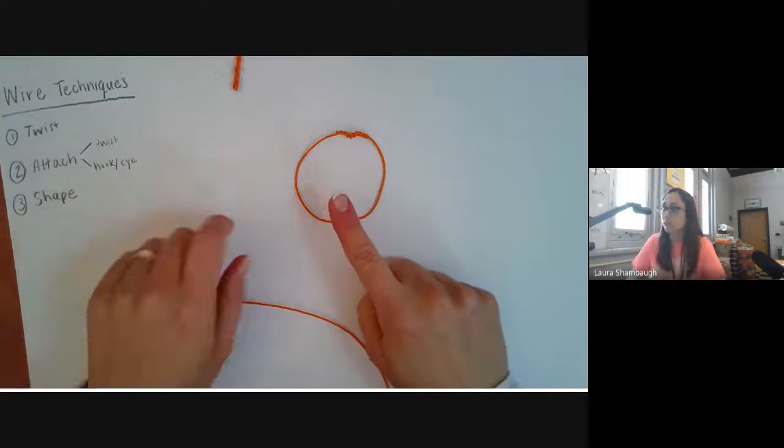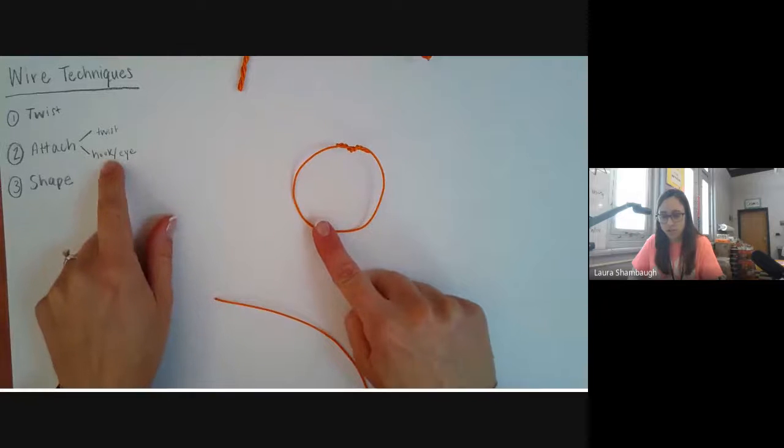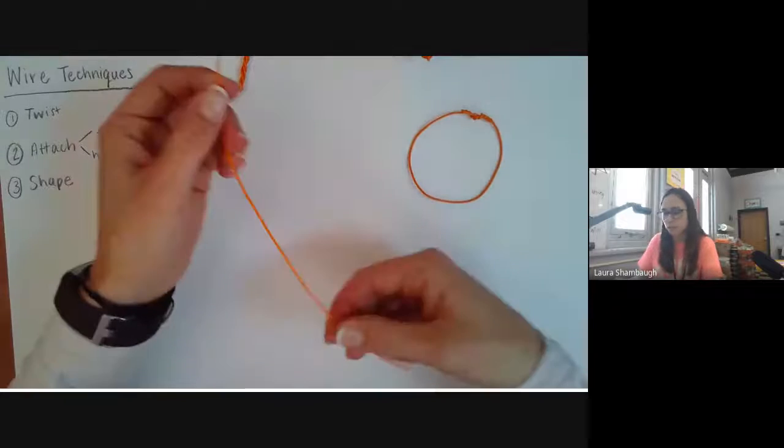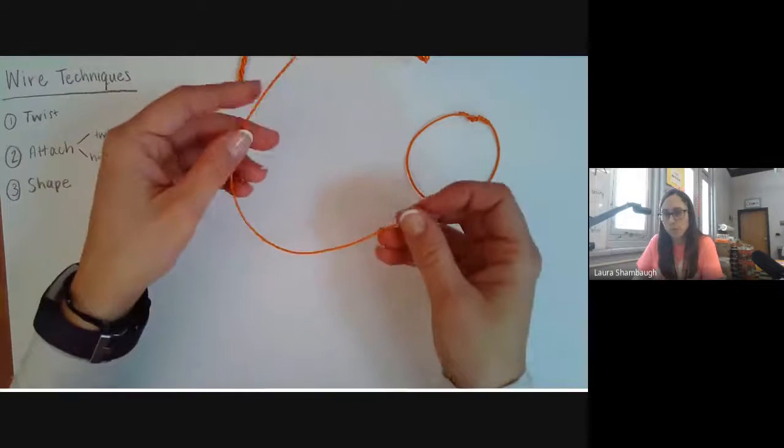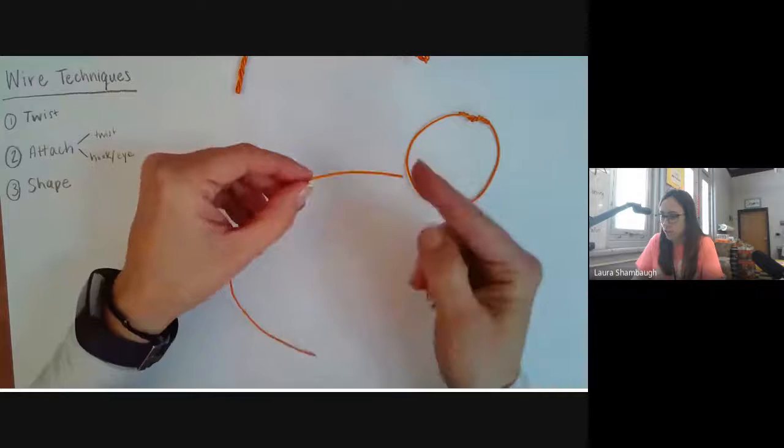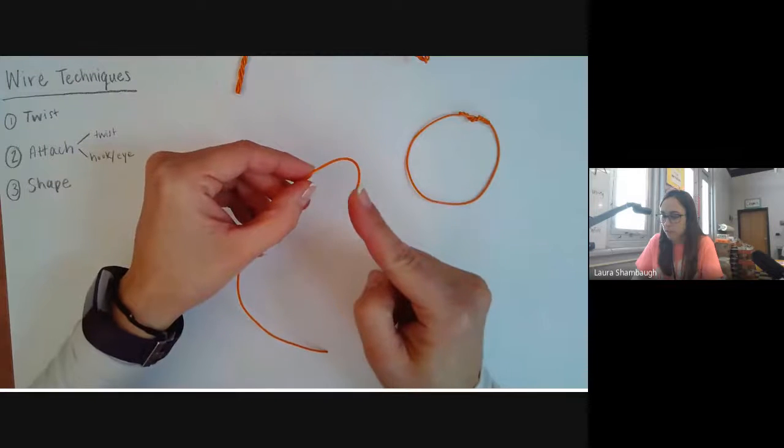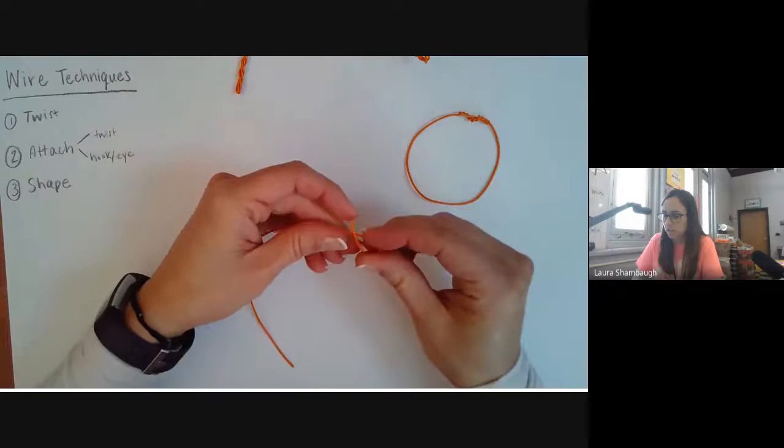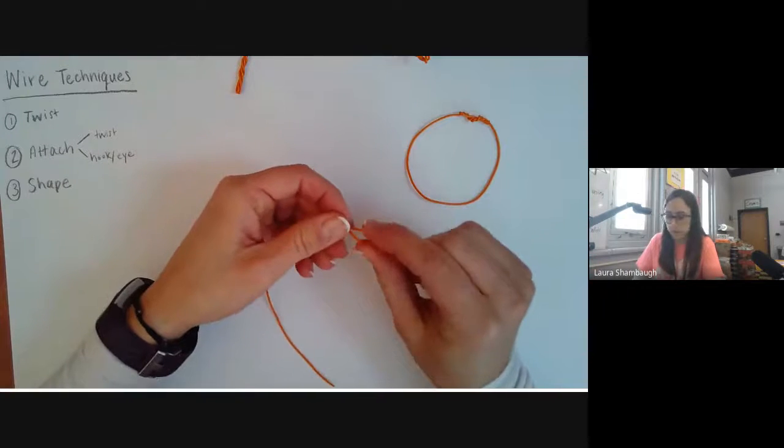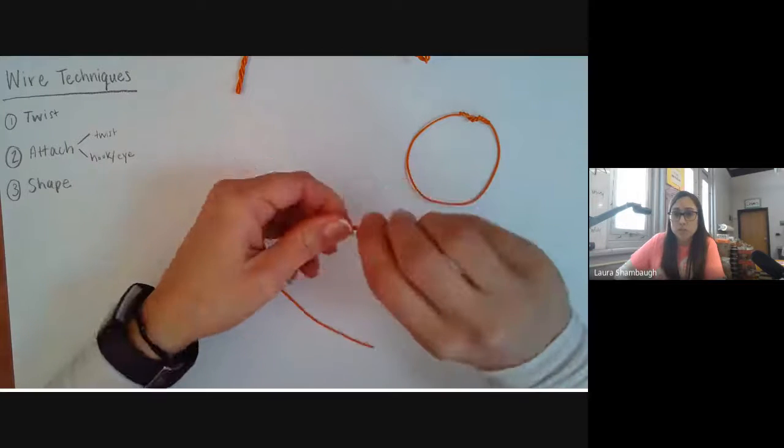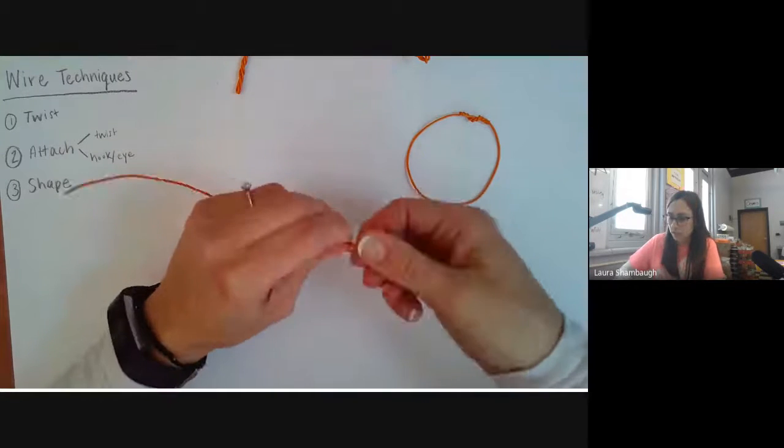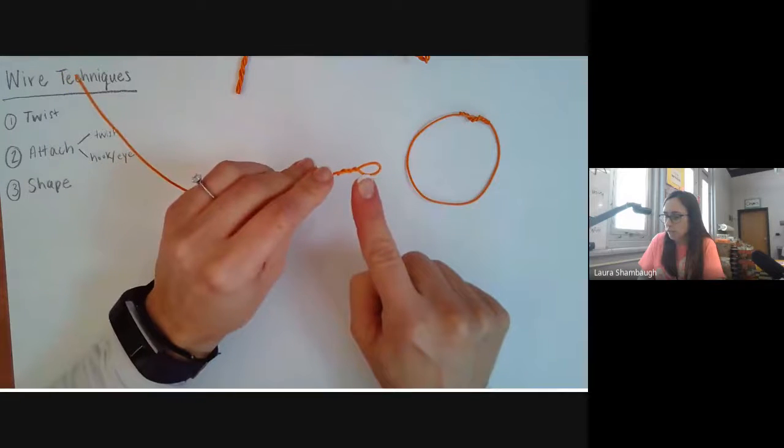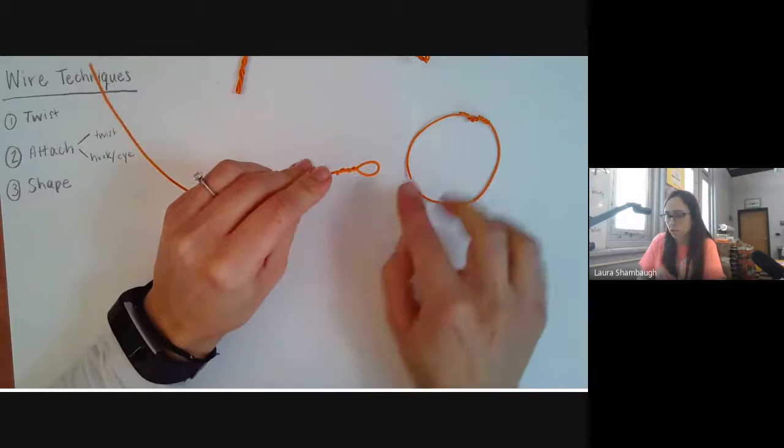That is one method of attaching. Another method is the hook and eye method. This one's often used for jewelry, but it's also good for any kind of movable part. For the first step we're going to make a hook. Actually, this is going to be the eye. The eye is just a little loop-de-loop, a little mini circle there.